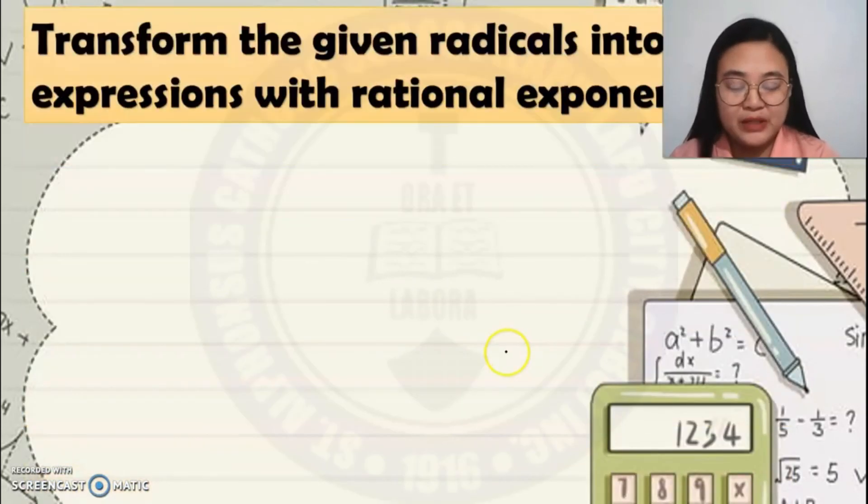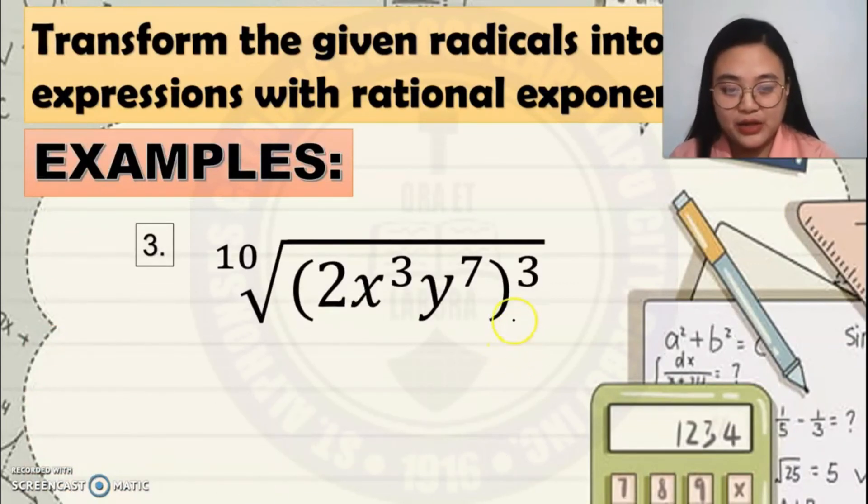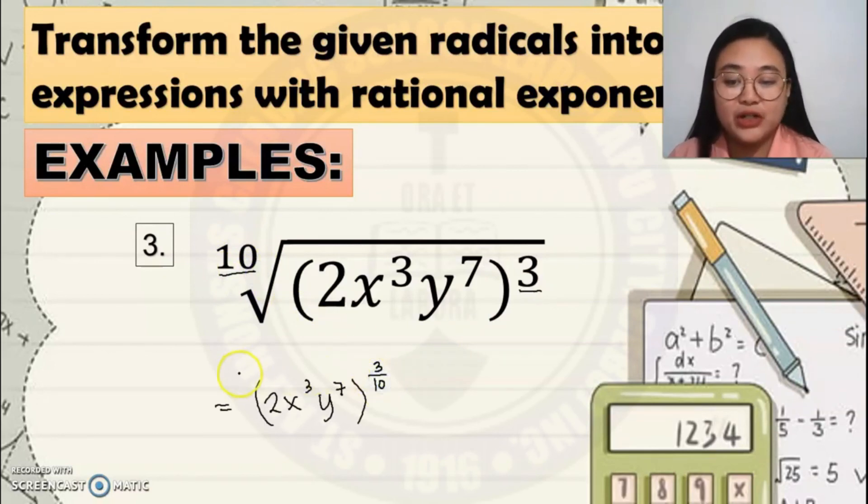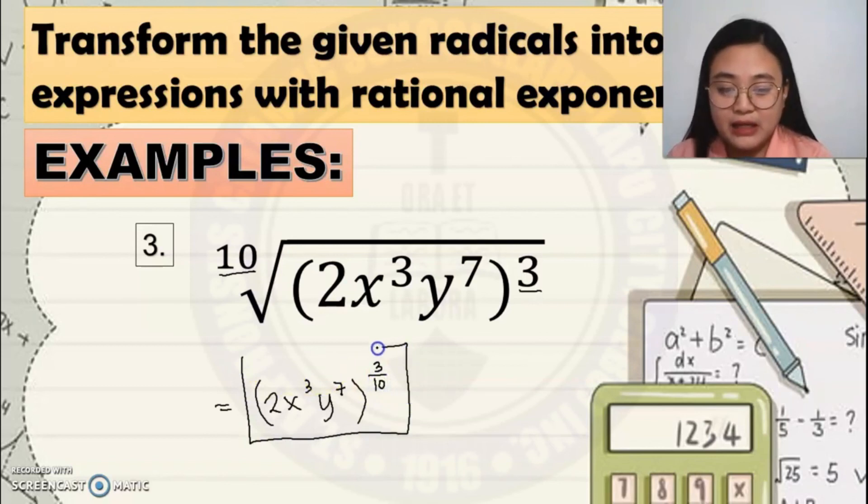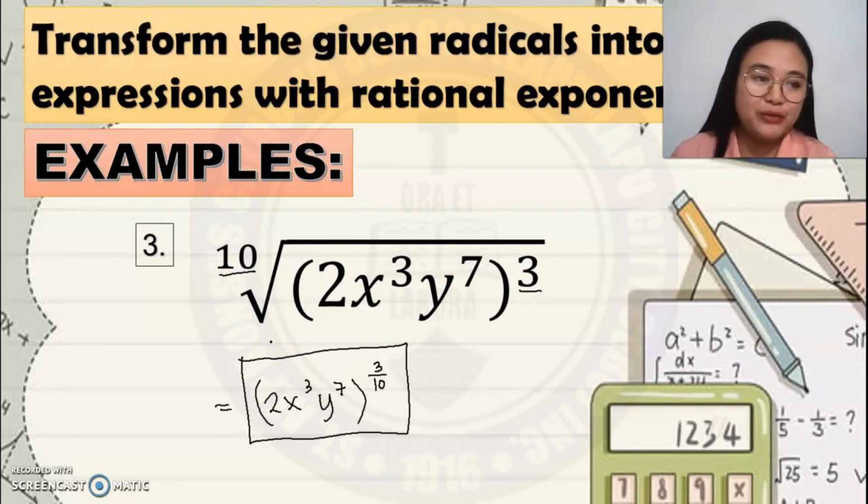Next example. Still transform the given radicals into rational exponents. This one. Since, as you can see, there's already cube outside the parenthesis, it will become like this. And that would be the final answer. As easy as that. And that would be all class in transforming rational exponents into radicals or vice versa.